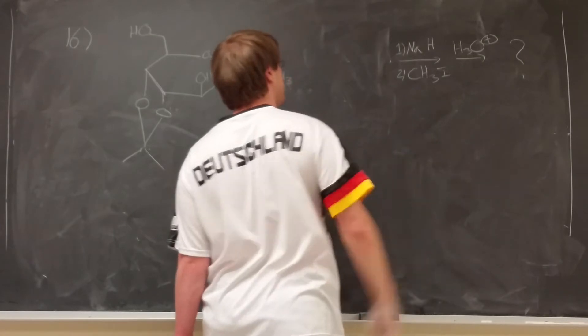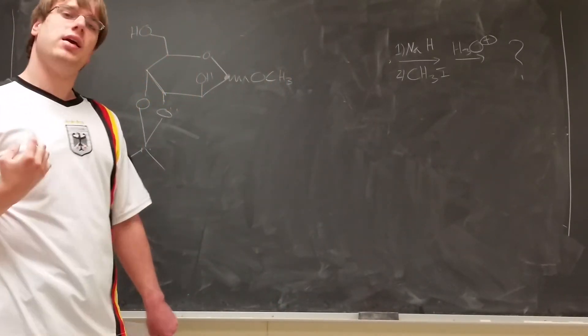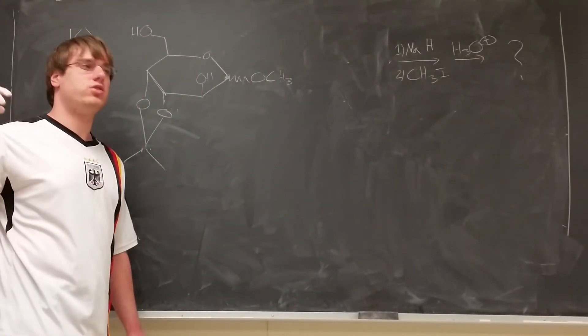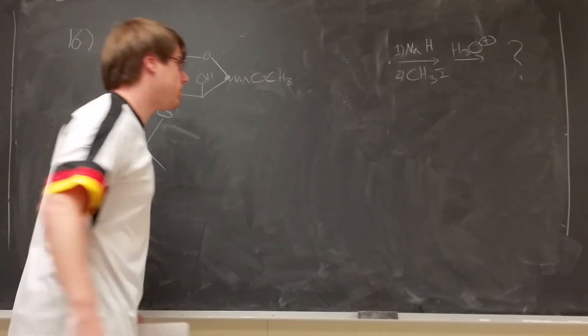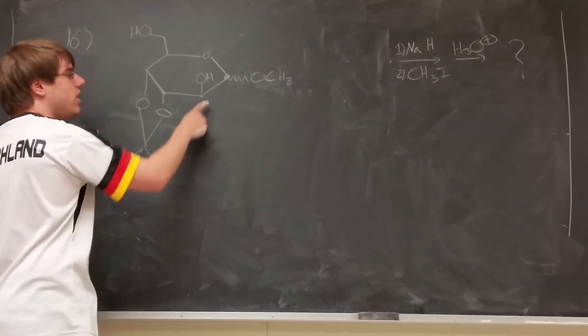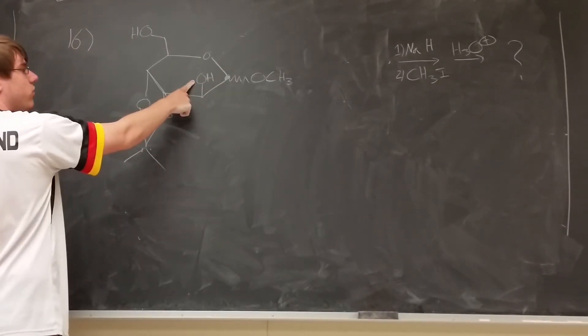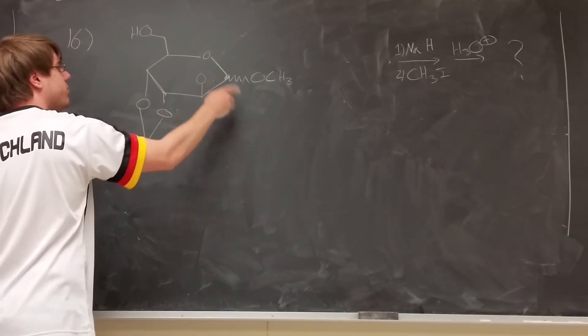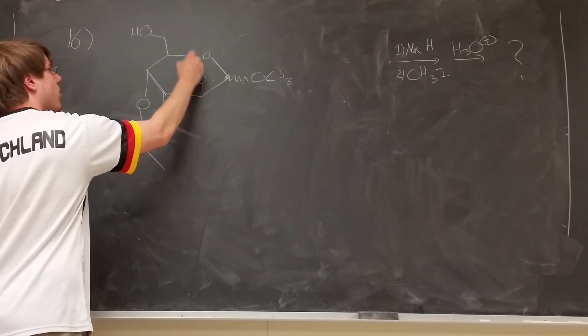The third arrow, NaH with CH3I. First, what NaH is, is a strong base. It's a source of H-, which will deprotonate those OHs that are left over, and it deprotonates every single OH that is available. In this case, there are two. This one over here, and this one over here. So it will deprotonate both of them, and they will both become O-.